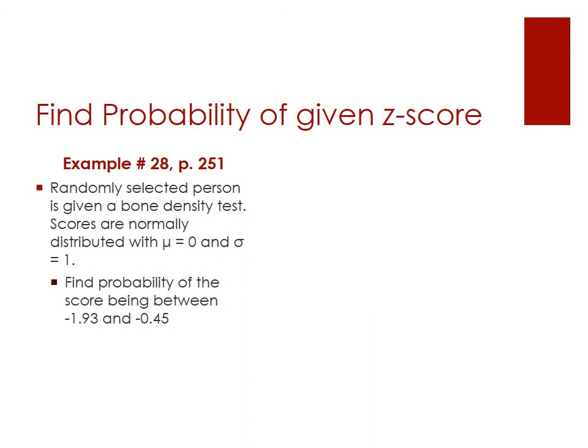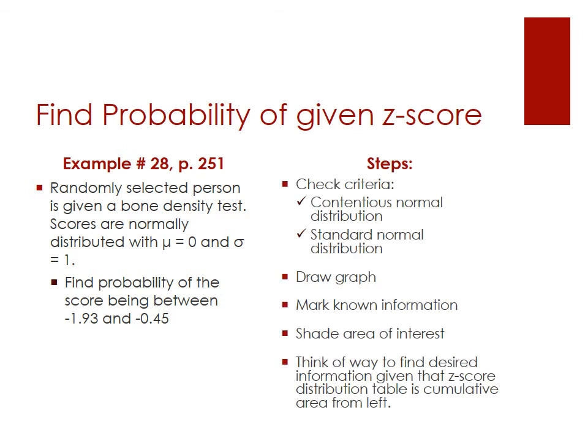For the last example, using the same distribution, we're asked to find the probability of a score being between negative 1.93 and negative 0.45. We've already completed the criteria check and confirmed we have a standard normal distribution. Stop the video, draw out your graph, mark your known information, and then move on to the next slide to check together.